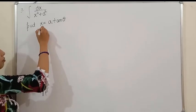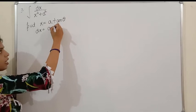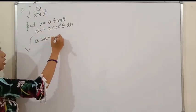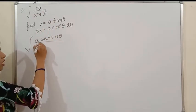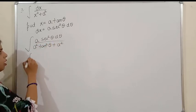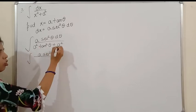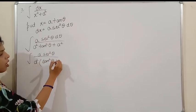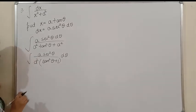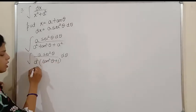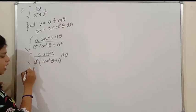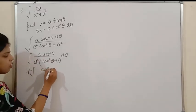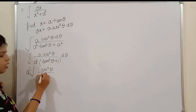Let x = a·tan θ, so dx = a·sec²θ dθ. Substituting: denominator becomes a²tan²θ + a² = a²(tan²θ + 1). Now 1 + tan²θ = sec²θ (a 10th class formula), so the a²sec²θ in numerator and denominator cancel. Taking 1/a outside as a constant, we are left with (1/a)·∫sec²θ/sec²θ dθ.